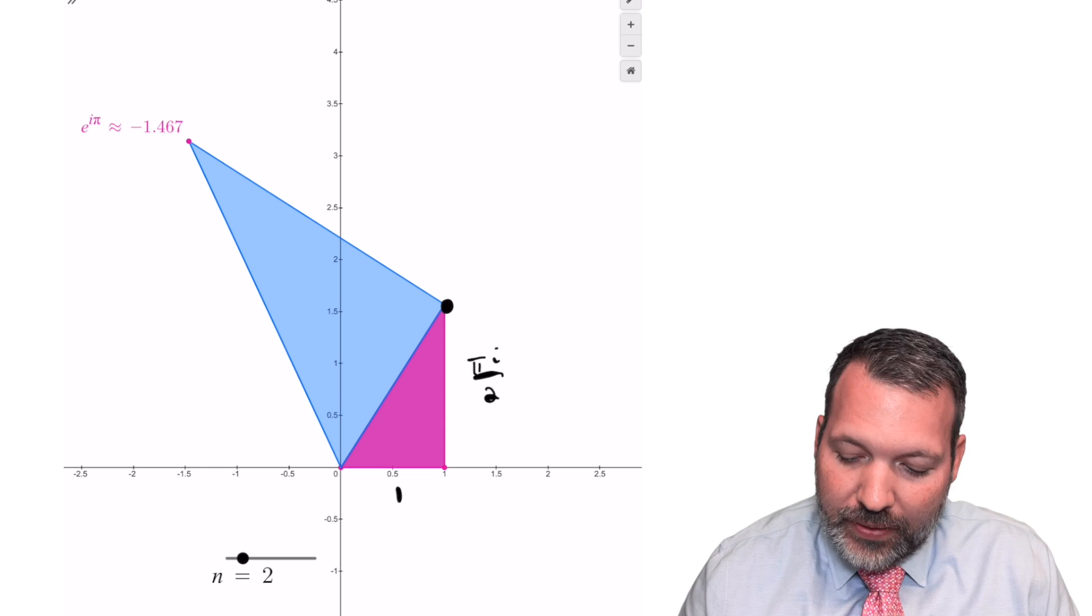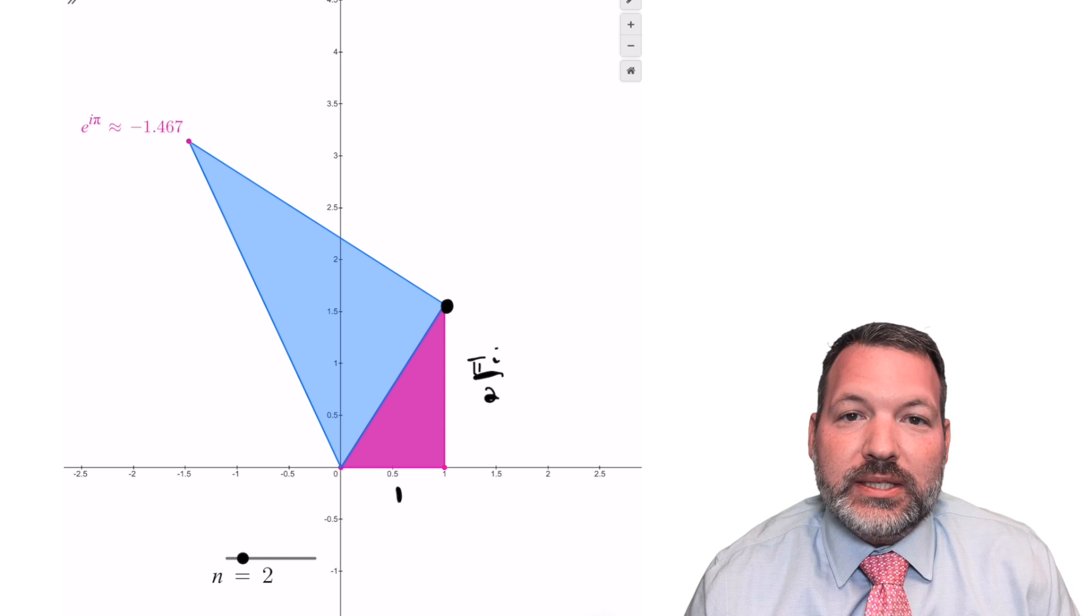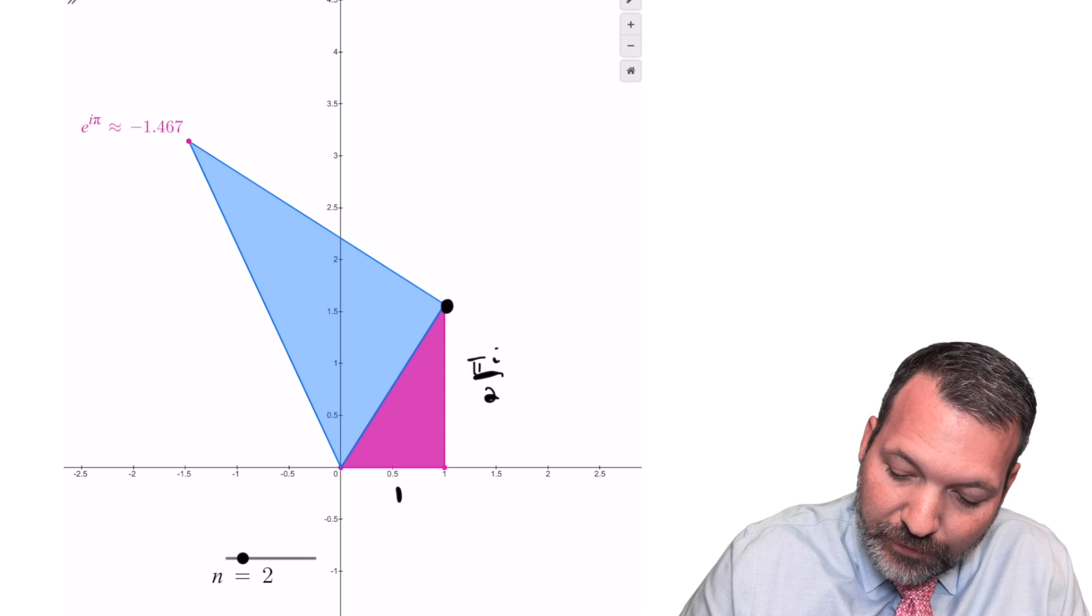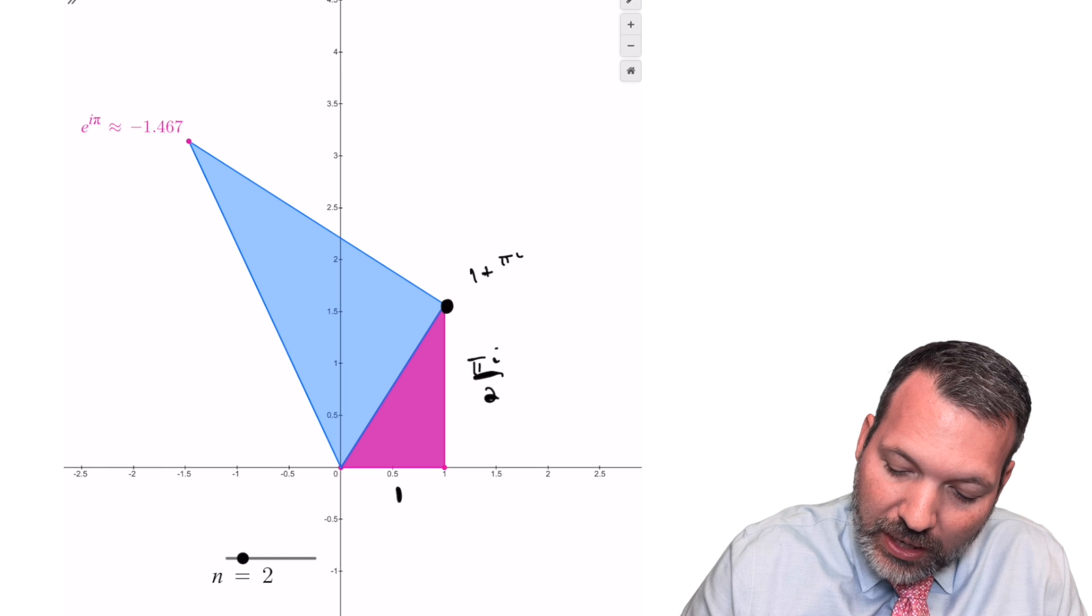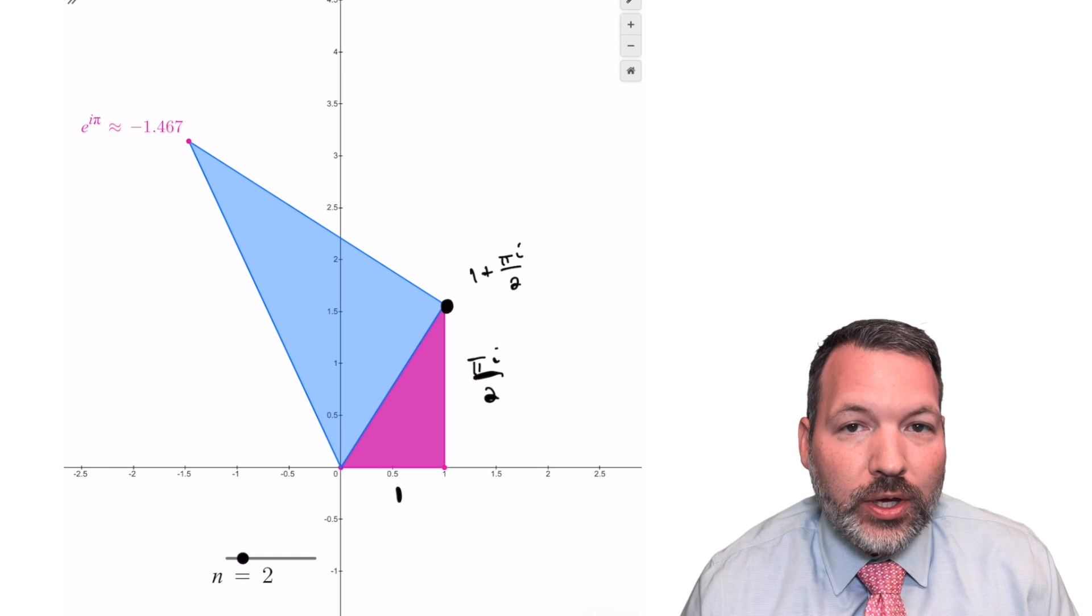The base, of course, is still one, and then the hypotenuse would be whatever it is in complex space. But this vertex right here now represents the complex number one plus pi i over two.